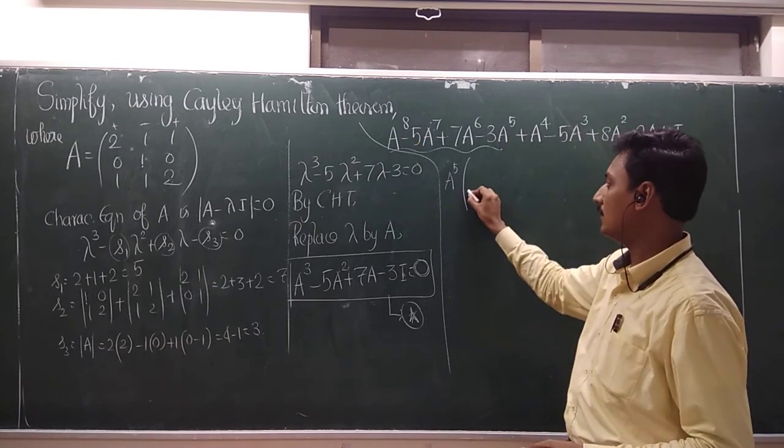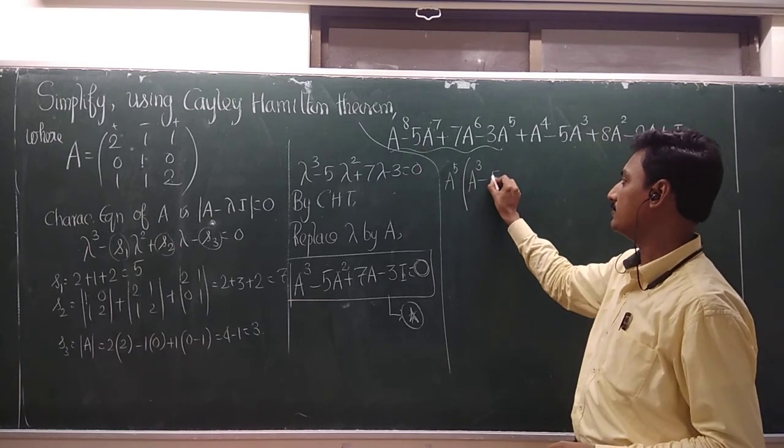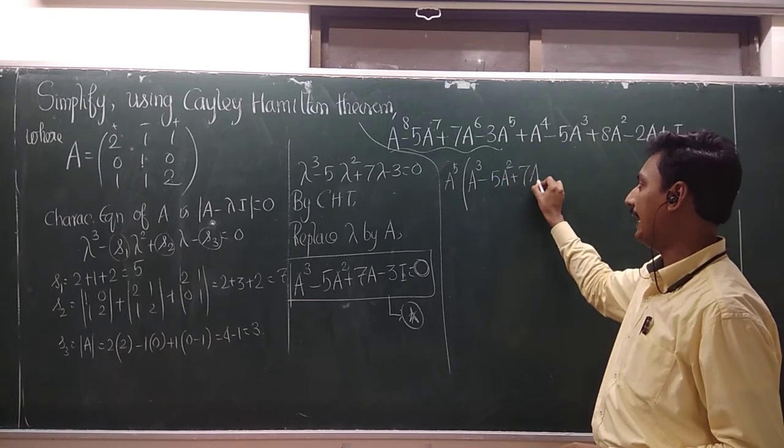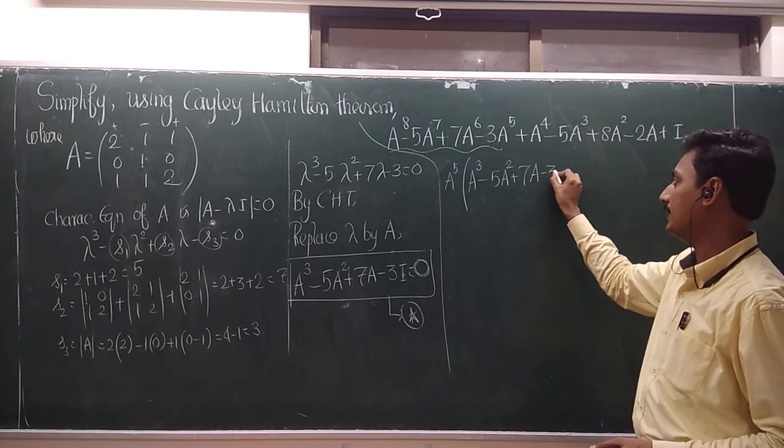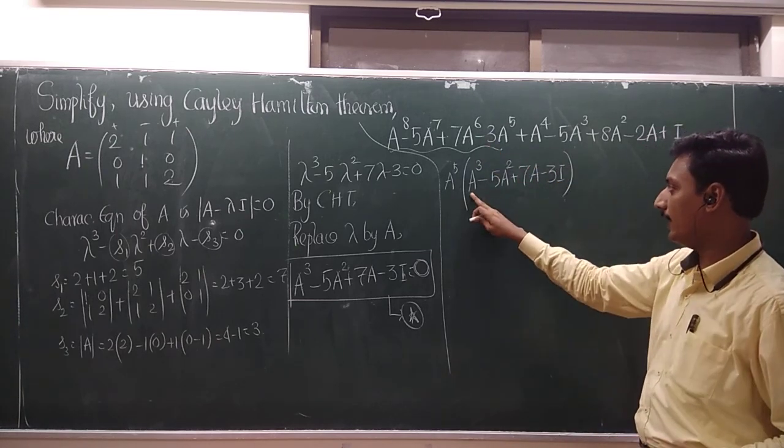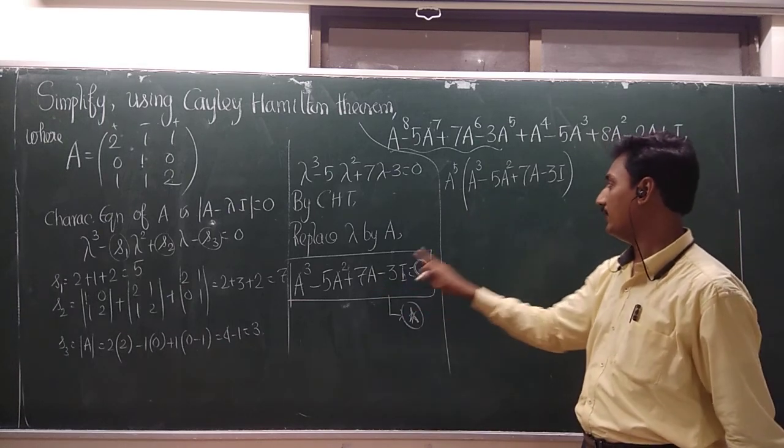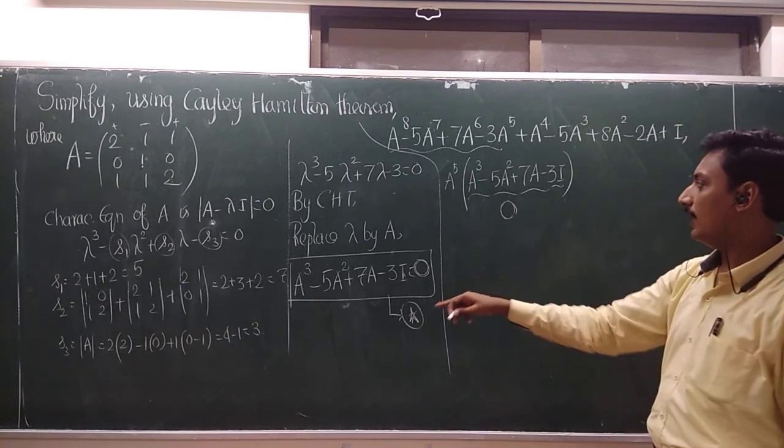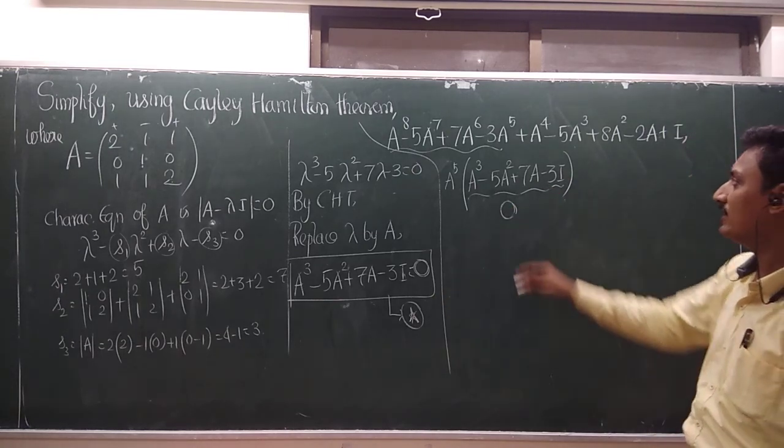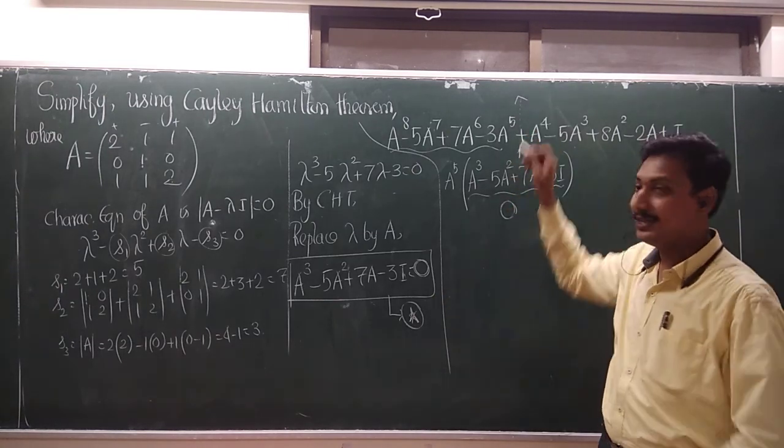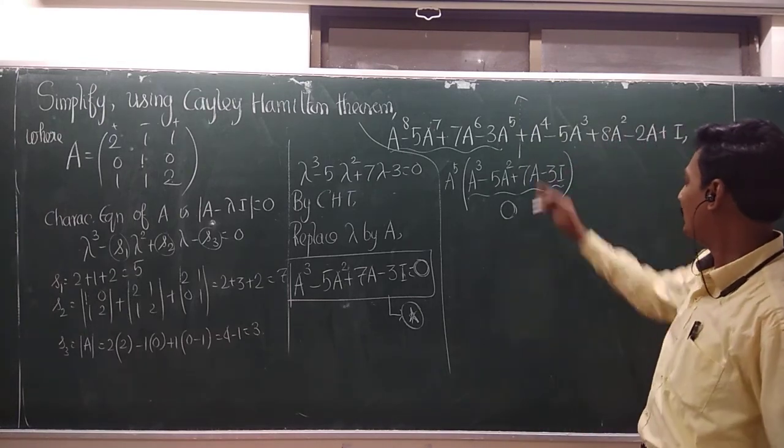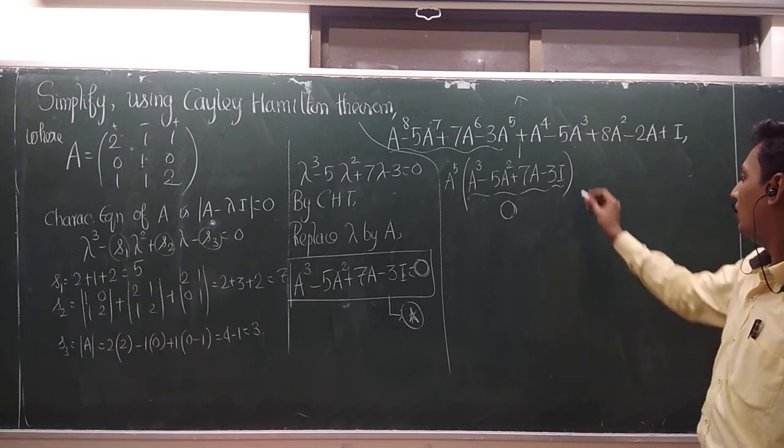What's the balance here? A power 3. This becomes minus 5A square. This becomes plus 7A. And this becomes minus 3 into I. So what about A cube minus 5A square plus 7A minus 3I? Zero. So by the star equation, this will become 0. So the first 4 terms is completely washed out.